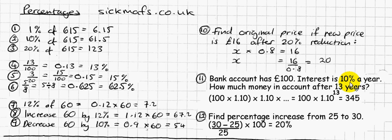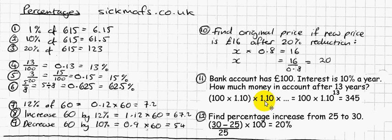But if I keep that £110 for another year, I get 10% on my £110 — not on the original £100, because now I've got £110 in the account. So the bank gives me 10% on £110. How much would I have after 13 years? I start with £100, multiply by 1.10 to increase by 10%, then take that answer and multiply by 1.10 again for year 2, and so on — 13 times.